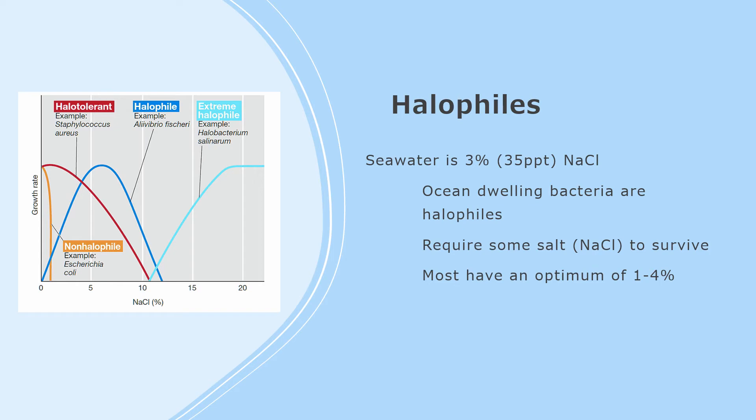Different bacteria require different salt concentrations. Most are non-halophiles and require a minimal 1% to none to survive. Marine bacteria require at least some NaCl, around 1–4%, because ocean water is naturally 3% NaCl or 35 ppt grams per kilogram. Halotolerant bacteria exist between non-halophiles and halophiles, thriving at minimal concentrations. Facultative halophiles do the opposite and thrive at high concentrations but can still live at 2% NaCl.